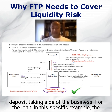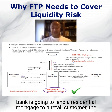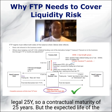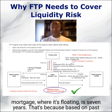For the loan, in this specific example, the bank is going to lend a residential mortgage to a retail customer. The mortgage is going to have a contractual maturity of 25 years — I've got that as 25Y — so a contractual maturity of 25 years. But the expected life of the mortgage is seven years.